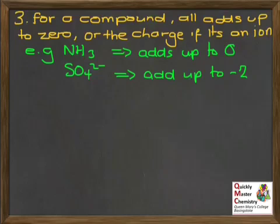If we're talking, on the other hand, about a sulfate ion SO4 two minus, there is an overall charge because it's an ion. And so the 1S and the 4Os, their oxidation states will all add up to minus two, because that's the same as the charge on the ion.